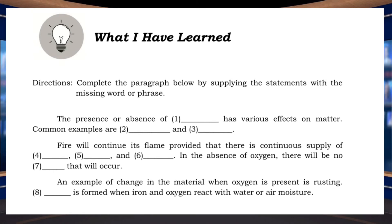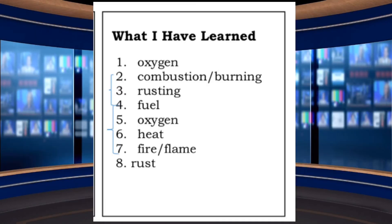Let us check your work. Number 1: oxygen. Number 2: combustion or burning. Number 3: rusting — the order of numbers 2 and 3 can be interchanged. Numbers 4, 5, and 6: fuel, oxygen, heat — the order can be interchanged. Number 7: fire or flame. Number 8: rust.